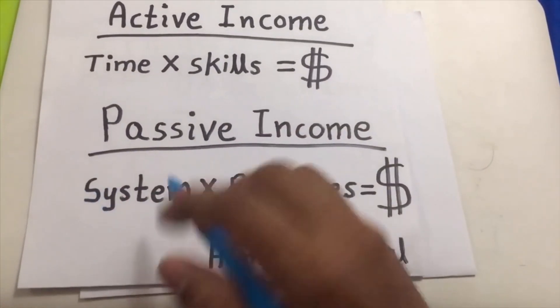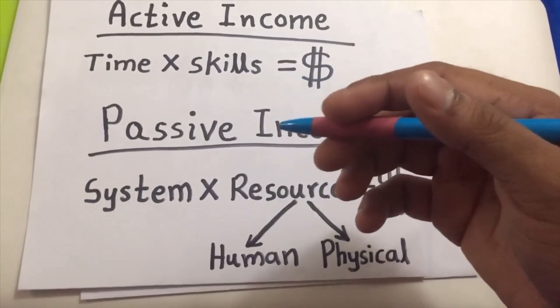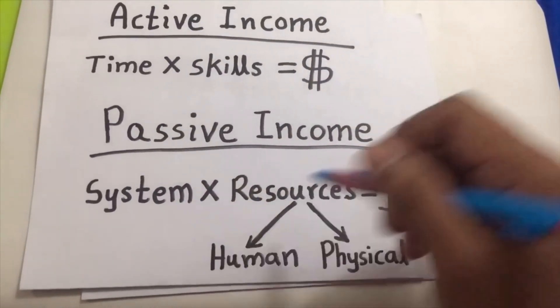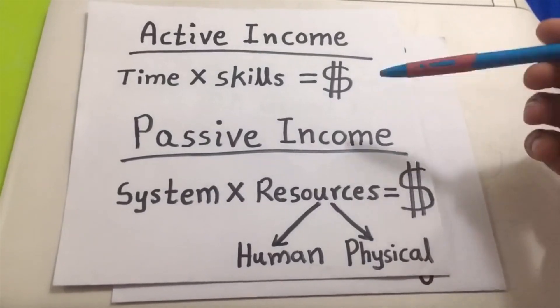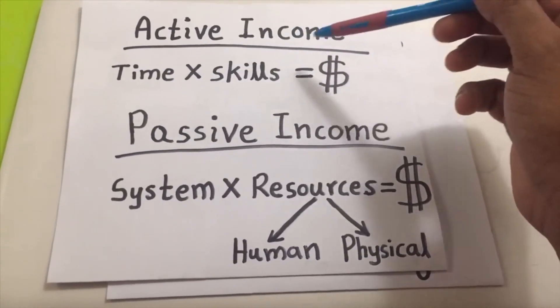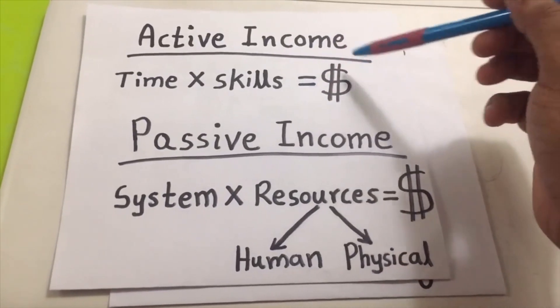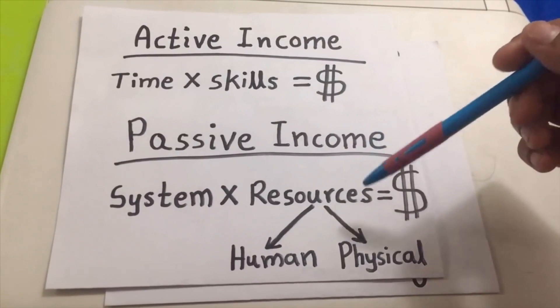The system can also be made better, or you can improve the system so that you can have a huge income. As I explained, you understood that an active income is a limited income, where there is a limit. And there is no limit in a passive income.